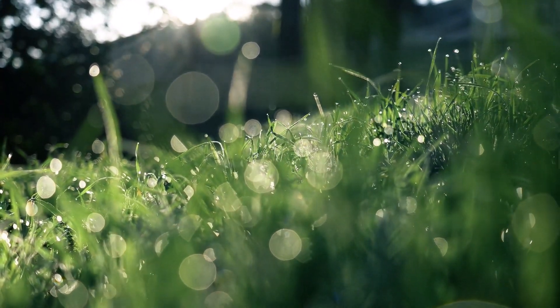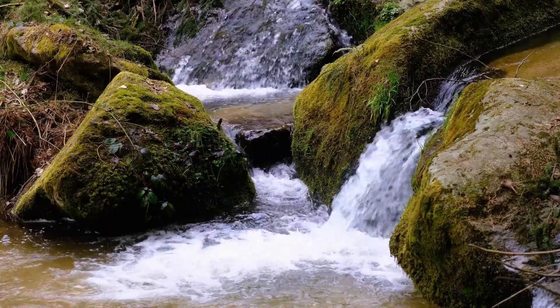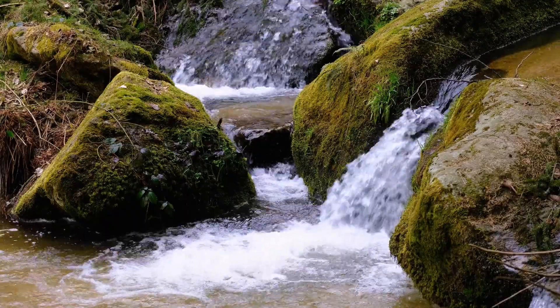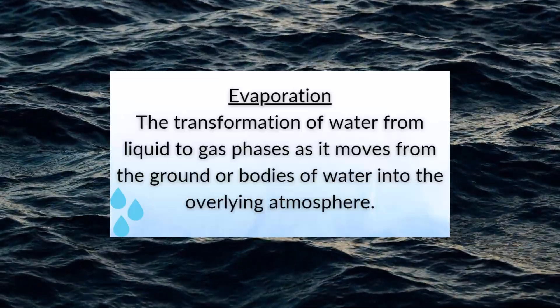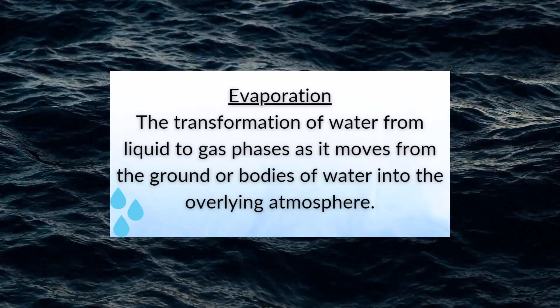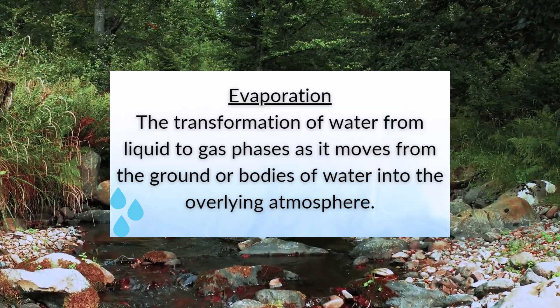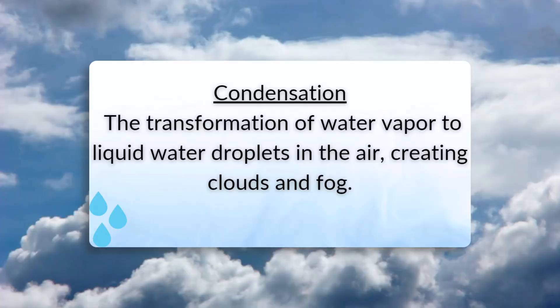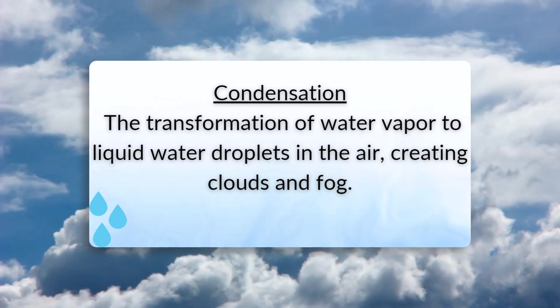The water then makes its eventual move to open water sources. This includes water bodies such as oceans, lakes, rivers, and streams. All water eventually ends up in an open water body if not consumed by plants or organisms. When it reaches that open water body, it'll eventually evaporate into the atmosphere through evaporation, which is the transformation of water from liquid to gas phases as it moves from the ground or bodies of water into the overlying atmosphere. The source of energy for evaporation is primarily solar radiation provided by our sun. This allows for the creation of clouds through condensation — the transformation of water vapor to liquid water droplets in the air — creating clouds and fog.